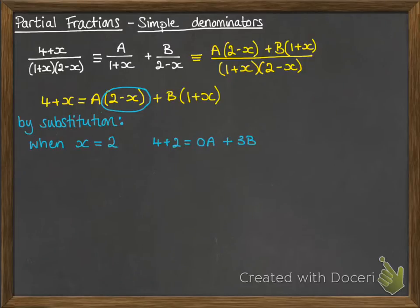So on the left hand side if we put in x equals 2 we get 4 plus 2, and on the right hand side we get 0A and 3B. So we can use that to work out what B is.